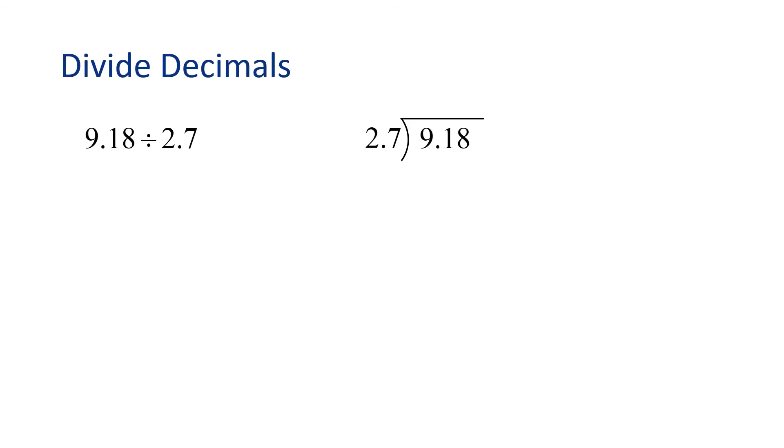Let's start by writing the problem with the long division sign. Since the divisor, 2.7, is not a whole number, we need to move the decimal point to the right, one place, to make it into a whole number.